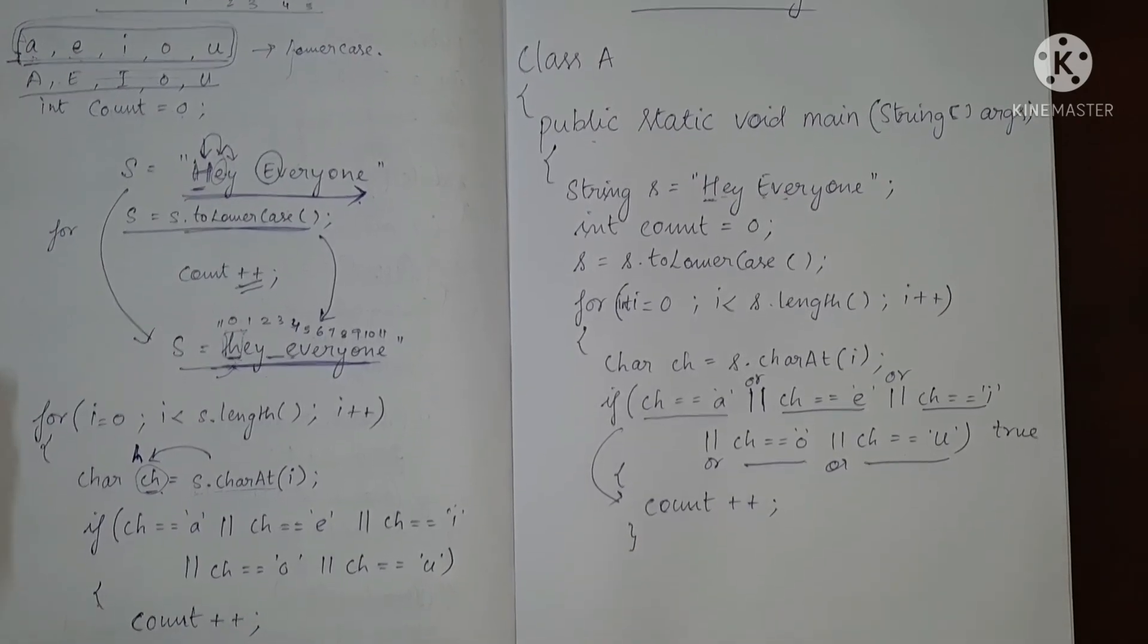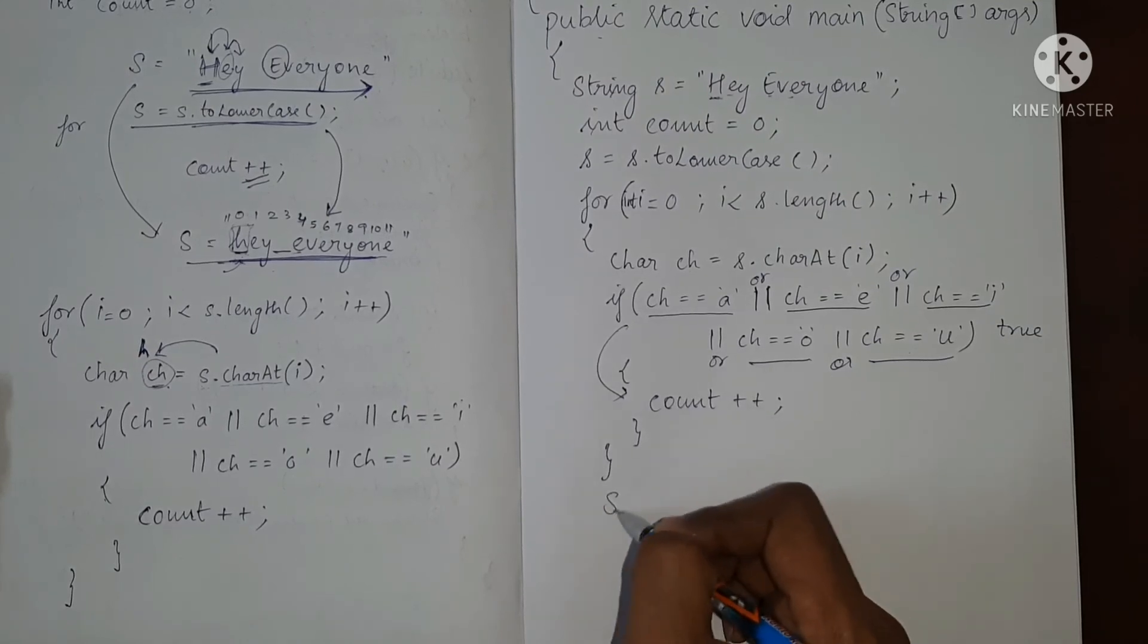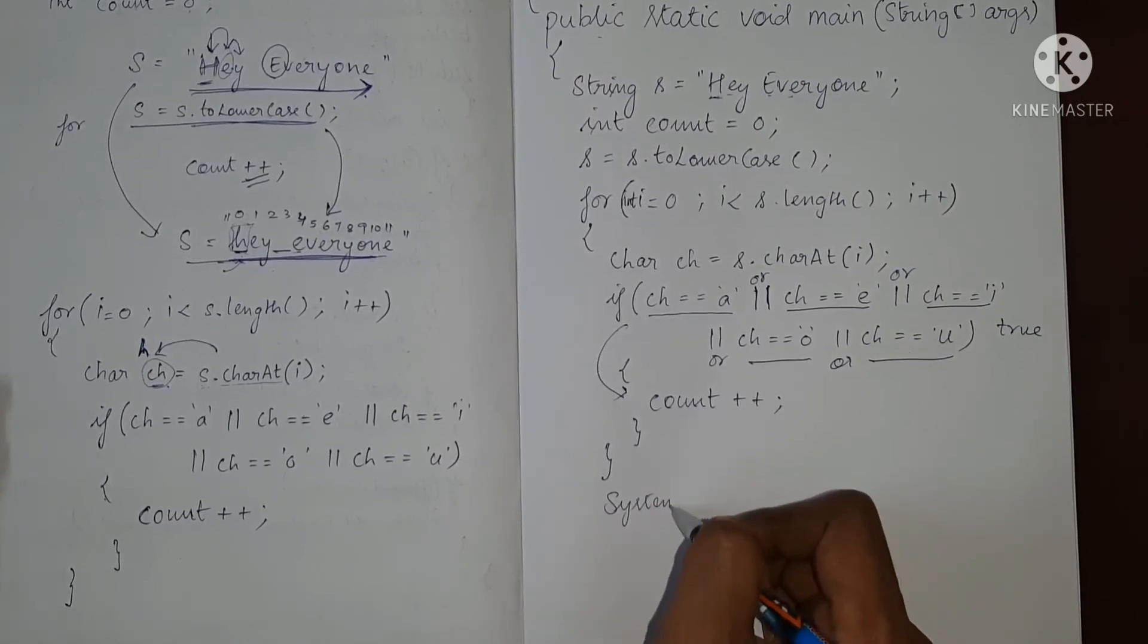So inside this we are going to do count plus plus. We close the if. We close the for loop. And outside we have to print.